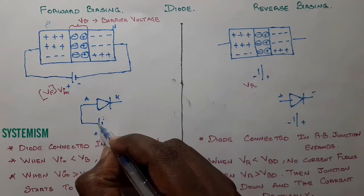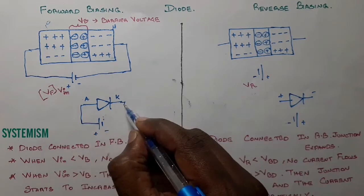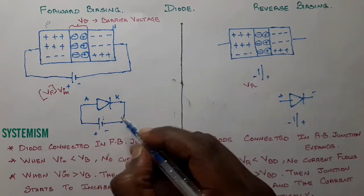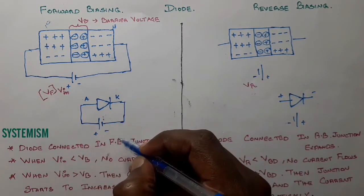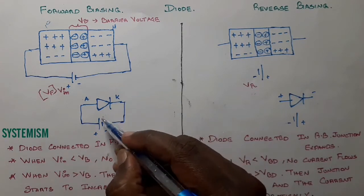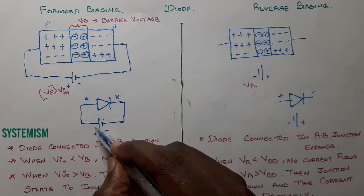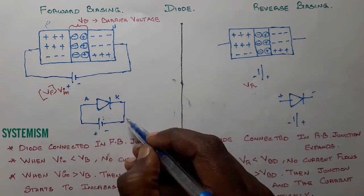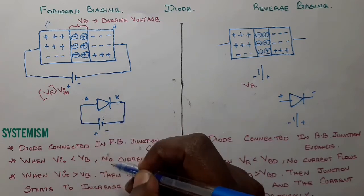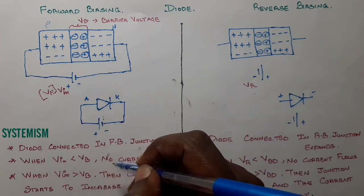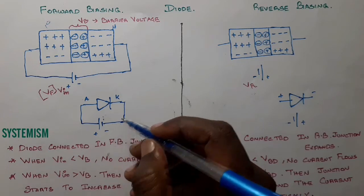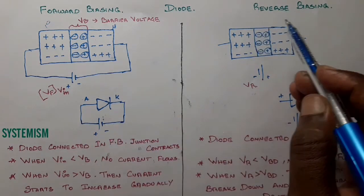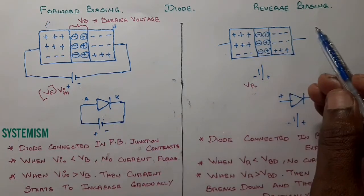This is the circuit configuration for connecting the diode in the forward bias condition. The anode is connected to the positive terminal and the cathode is connected to the negative terminal.